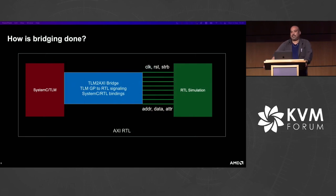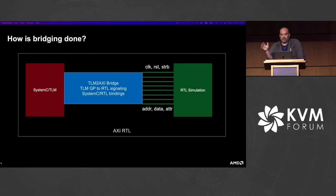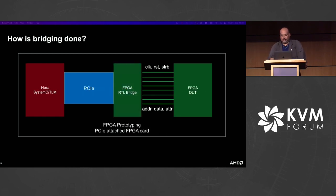Bridging between SystemC and RTL simulation works differently. A TLM generic payload is a structure describing a transaction — the address, byte count, attributes like secure vs. non-secure, master ID, cacheability attributes, and so on. The bridge's job is to replay that transaction on the RTL signaling. For AXI, that means replaying the various phases of the AXI protocol so that the RTL-simulated logic simply responds.